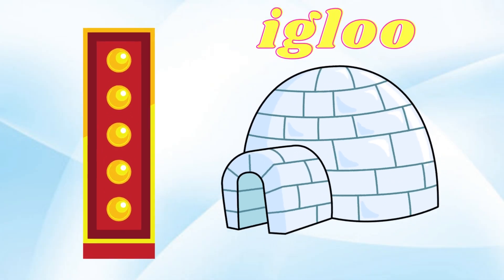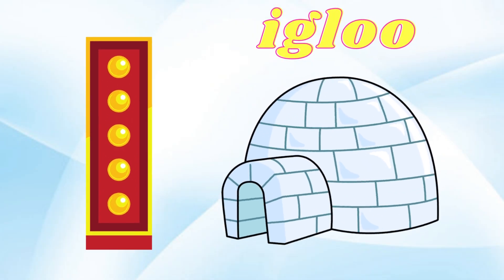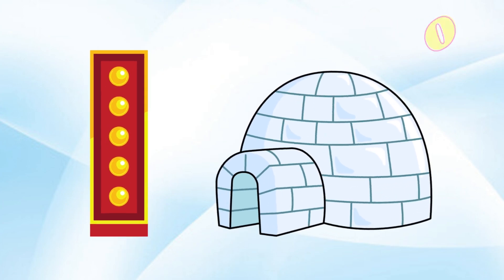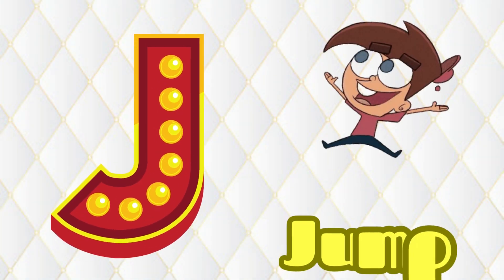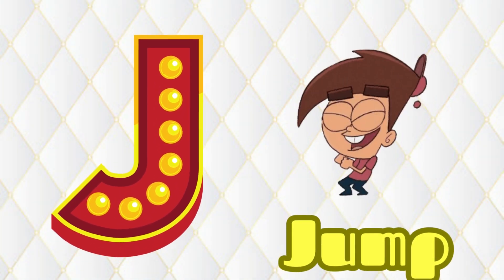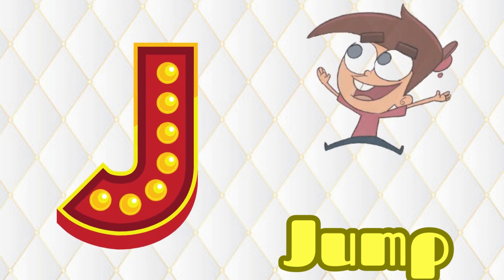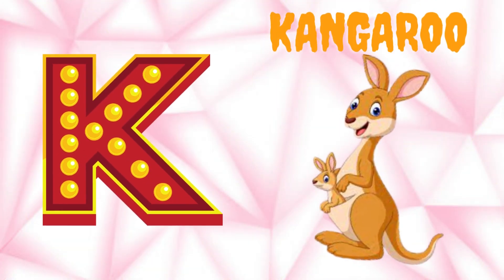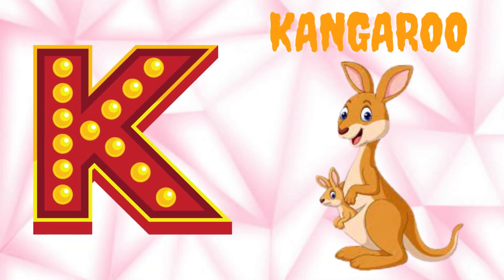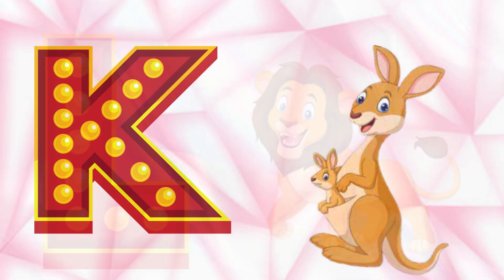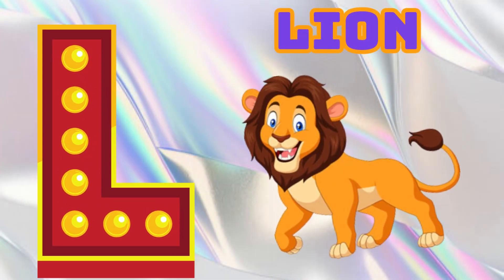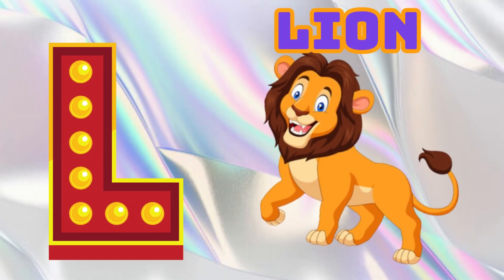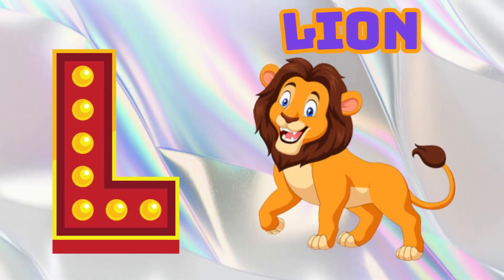I is for Igloo, I-I-Igloo. J is for Jump, J-J-Jump. K is for Kangaroo, K-K-Kangaroo. L is for Lion, L-L-Lion.